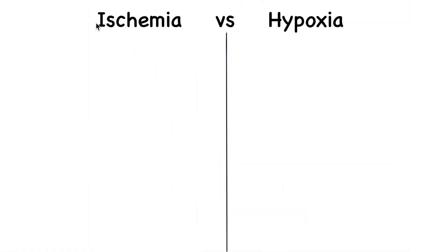In this video I want to quickly outline the differences between ischemia and hypoxia. Ischemia consists of the word 'ische' and 'emia' — 'ische' means to hold back or restrain, and 'emia' means blood, so altogether it means to stop or hold the blood.